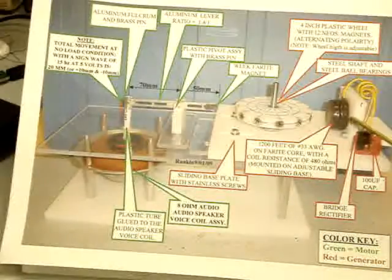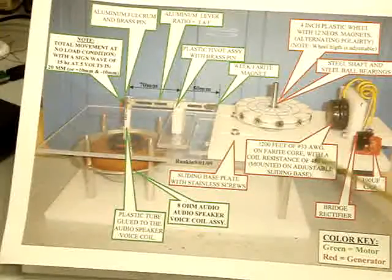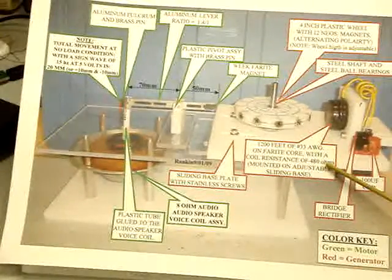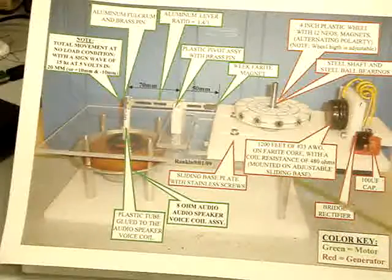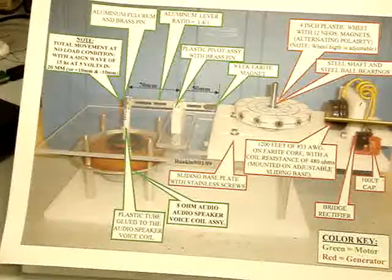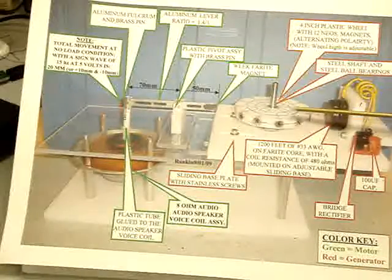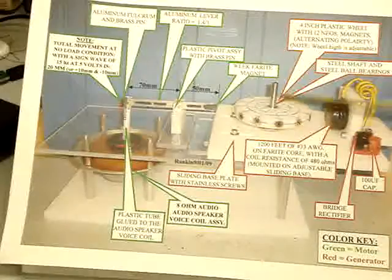I have a generator coil. It has 1,200 feet of 33 gauge wire wrapped on a ferrite core with a core resistance of 4,800 ohms, and it's mounted, also mounted on an adjustable slide, so this allows me to adjust the distance between my generator coil and magnets on my rotor.